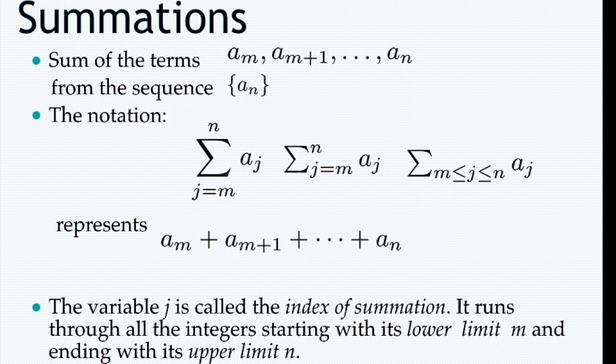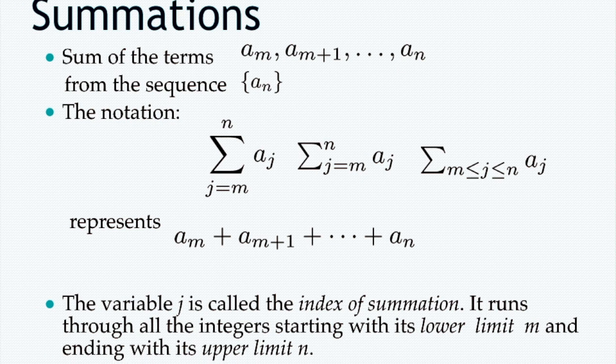The second subject is summations. A summation is basically a for loop where we sum a value inside the loop body. We sum terms a(m), a(m+1), all the way to a(n). We use sigma notation, specifying the initial loop counter j=m, up to n, summing a(j). For example, to sum all values from 1 to 100, n=100 and m=0.